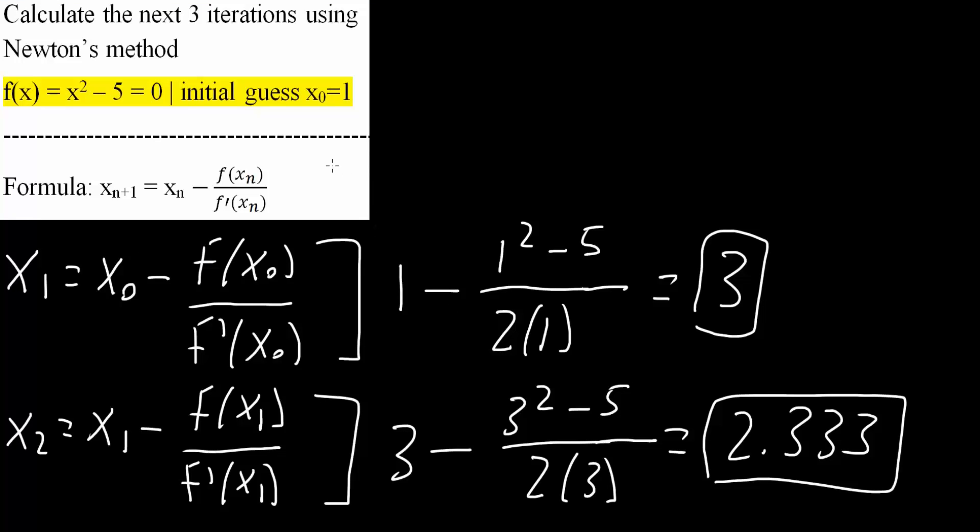Now the reason why we got only one answer is because the initial guess was 1. If the initial guess, let's say it was going to be negative 5, then we would get the other answer. We would get the negative 1. And that's all we need to do for this problem.